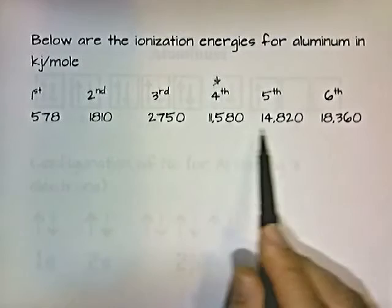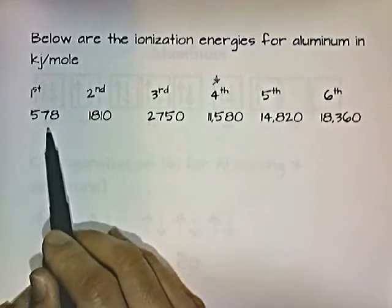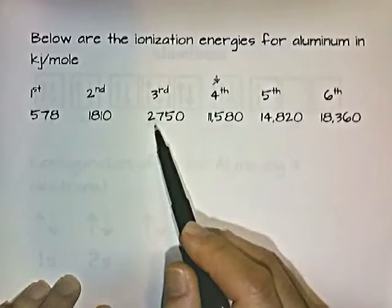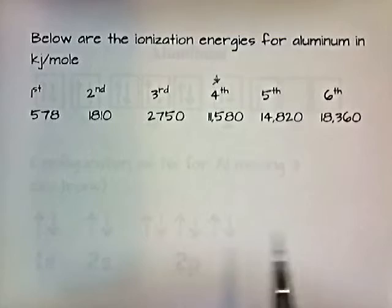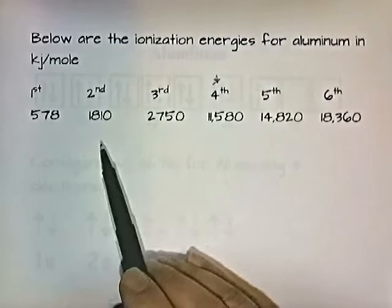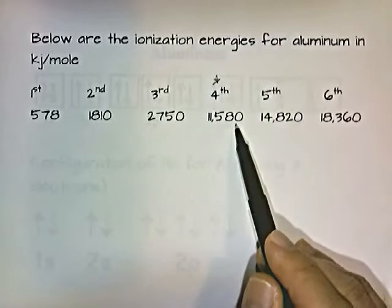Here are some ionization energies for aluminum. To remove the first electron from aluminum, it takes 578 kilojoules per mole. After the first electron is removed, it takes 1810 kilojoules to remove the second. After the second is removed, it takes 2750 kilojoules. Each time you remove an electron, it gets harder and harder to remove subsequent electrons. But notice there's a sudden leap in energy from the third to the fourth — going from roughly 2000 to 11,000 kilojoules per mole.